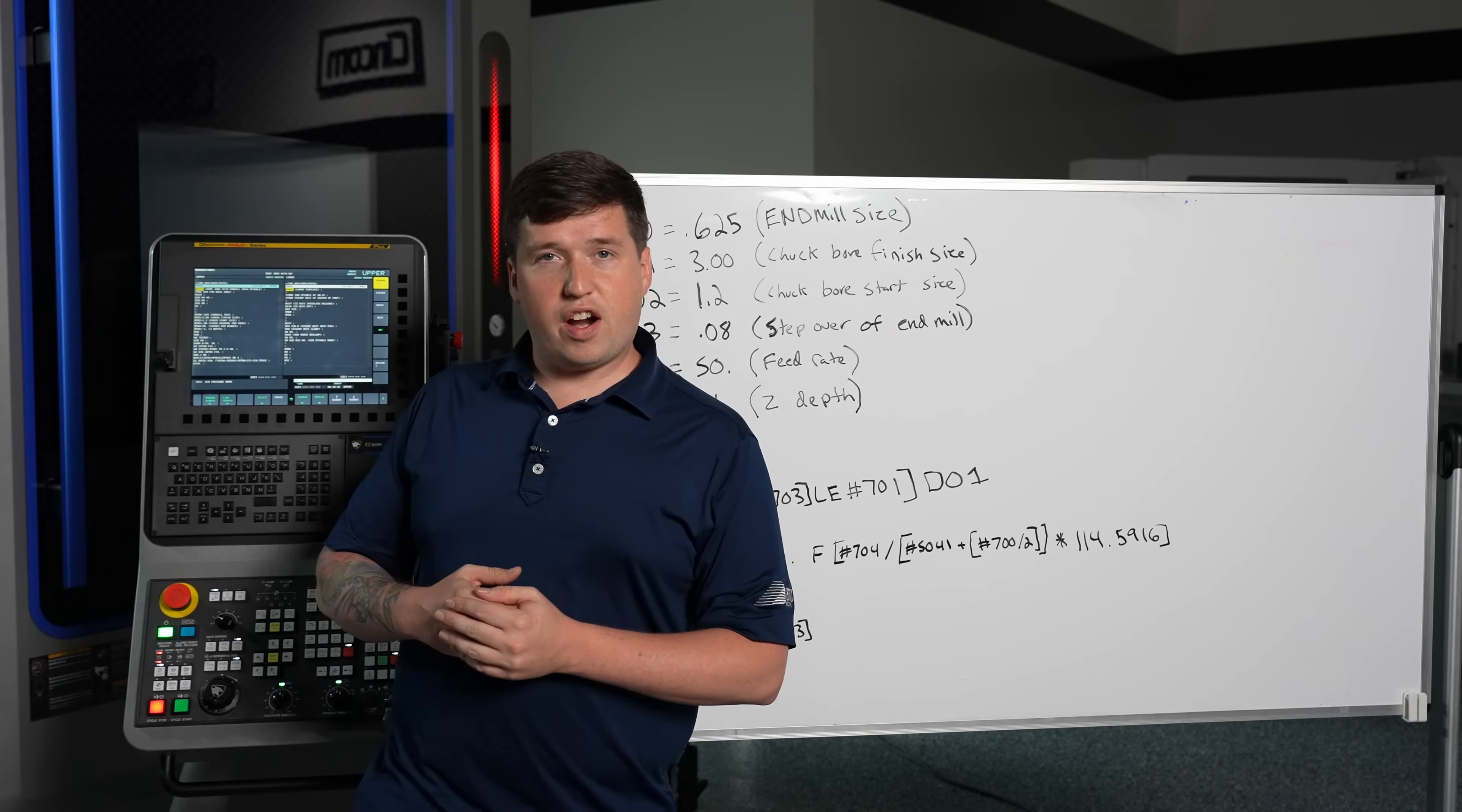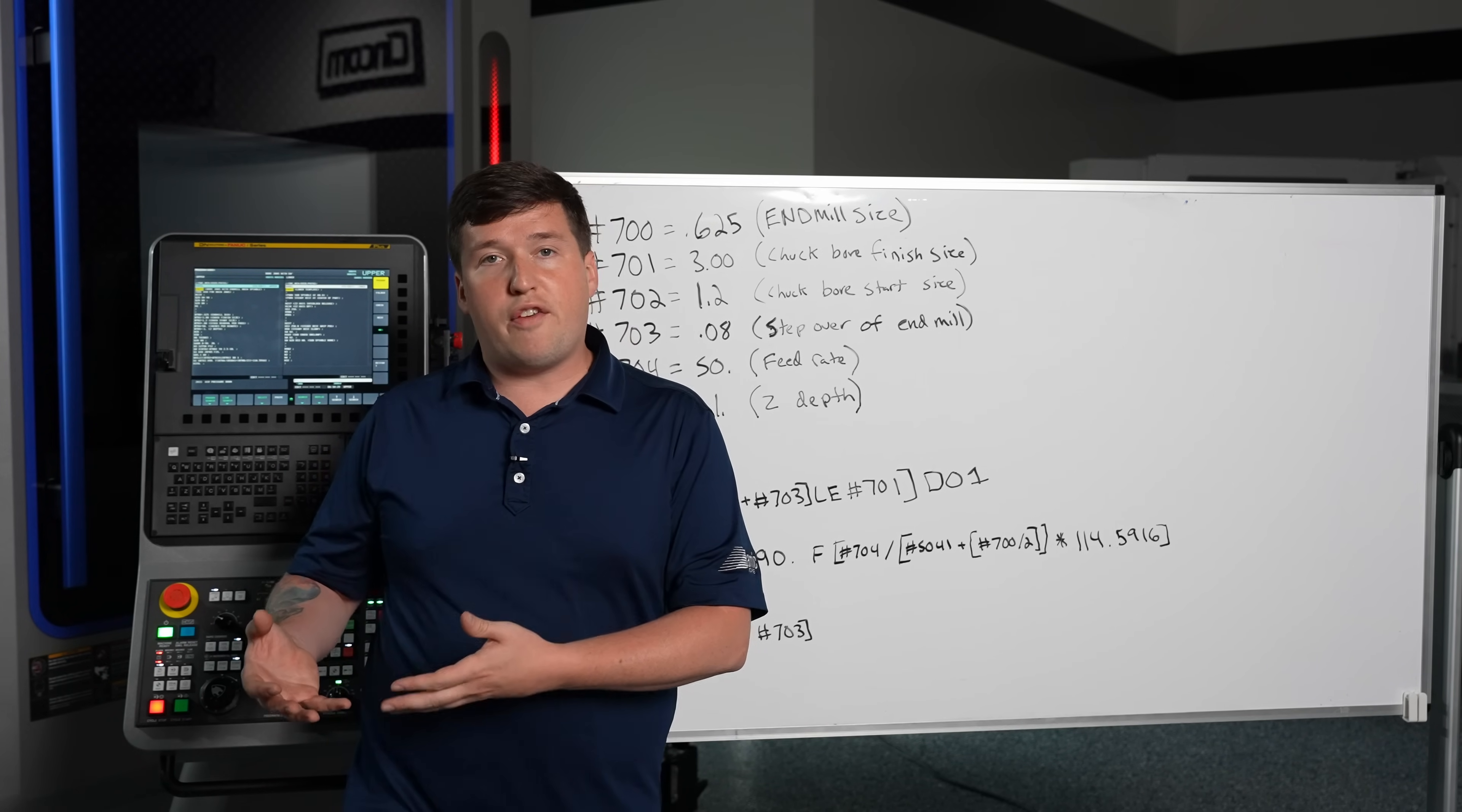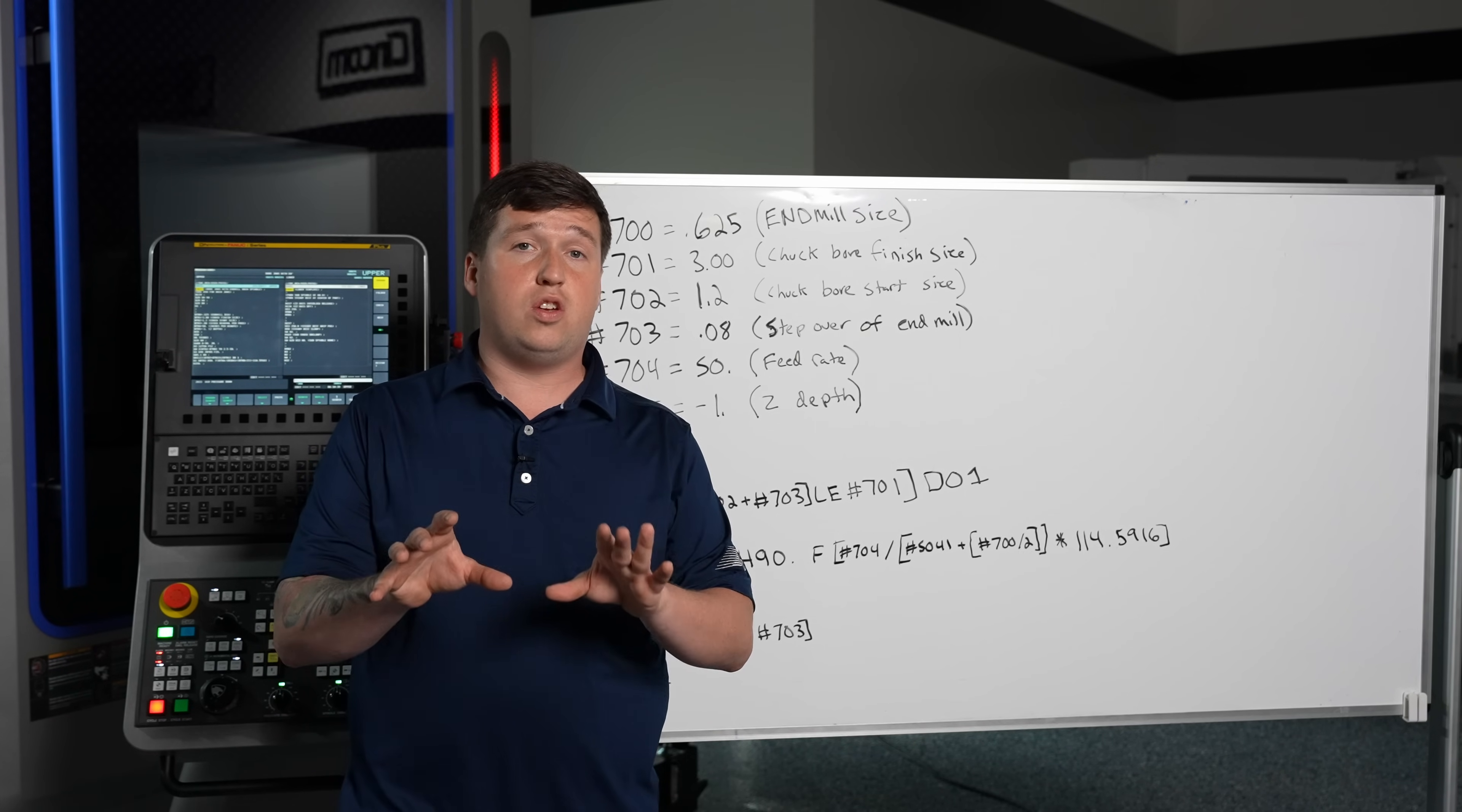The next variable is pound 701. Now pound 701 is going to be the finished bore size. Now in this case I actually wanted to finish at 3 inch because I had 3 inch stock but let's say you were using this macro to rough out your jaws then you could put 2.990 and leave stock for a boring bar after this. Again you don't have to finish your jaws with this method it's totally up to you and what you want to do.